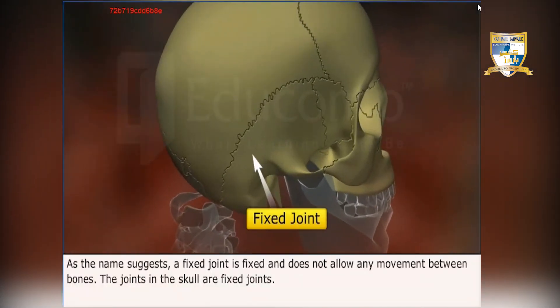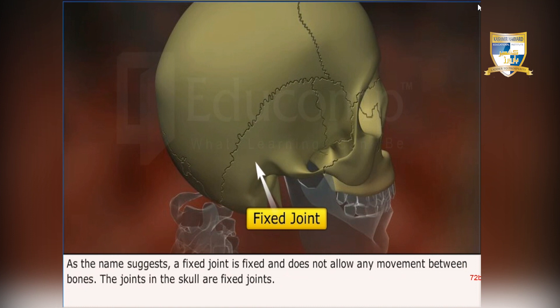As the name suggests, a fixed joint is fixed and does not allow any movement between bones. The joints in the skull are fixed joints.